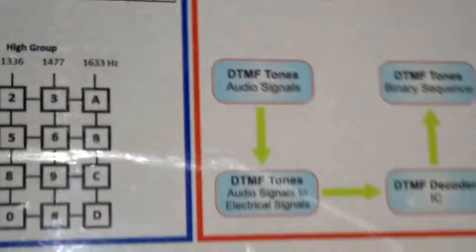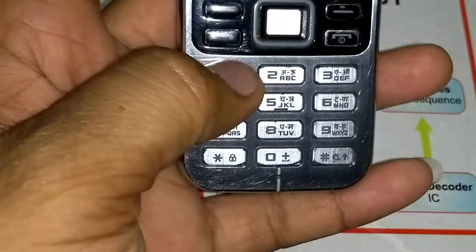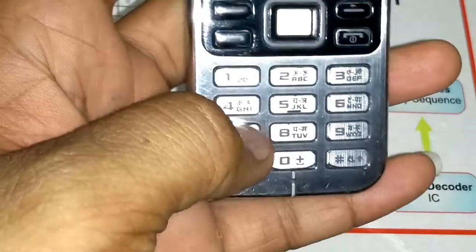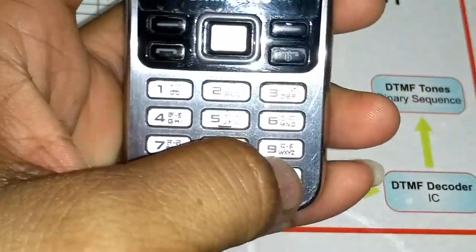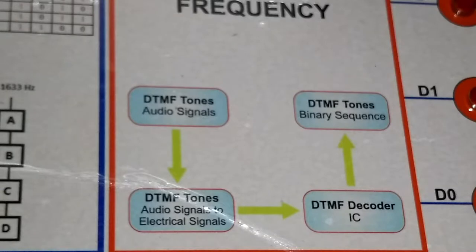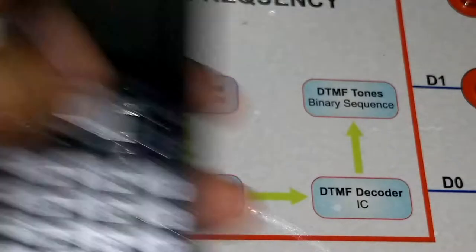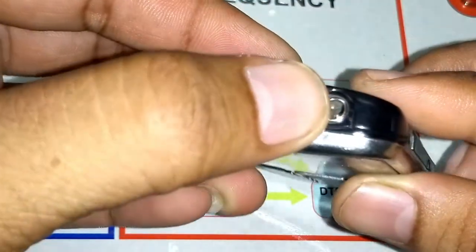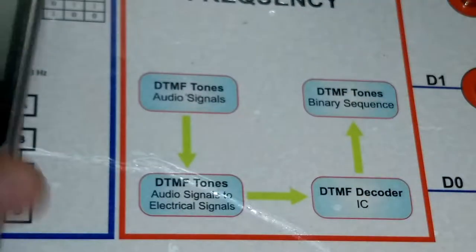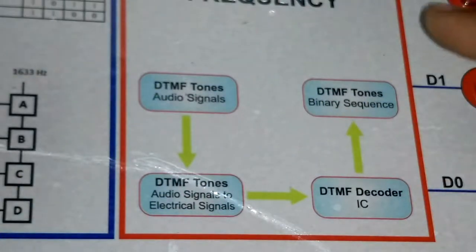This is the DTMF tone. Suppose this is my phone — you can press the button and see the normal DTMF tone. The DTMF tone is an audio signal. The audio signal is generated from this phone and I will receive it from the 3.5mm jack. When I press the button, the tone is generated and fed into the board.